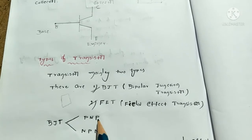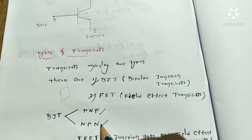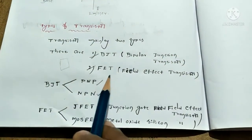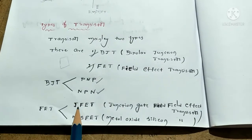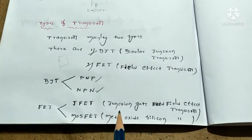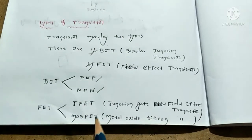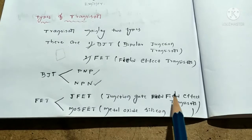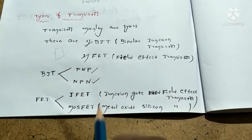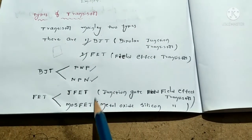BJT is 2 types: PNP and NPN. This is very important. FET is also 2 types: JFET and MOSFET. JFET means Junction Gate Field Effect Transistor. MOSFET means Metal Oxide Silicon Field Effect Transistor. Field Effect Transistor has 2 types, and BJT has 2 types.